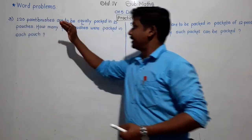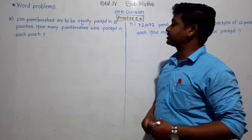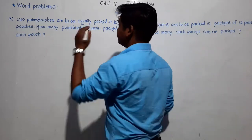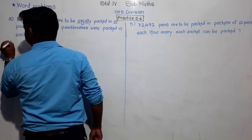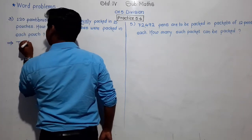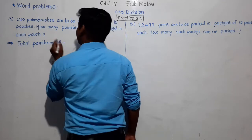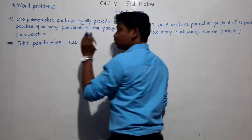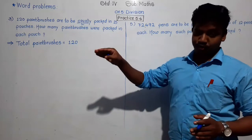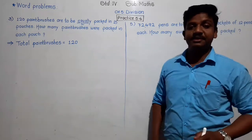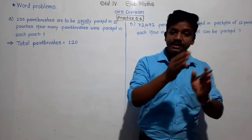Problem number 3: 120 paintbrushes are to be equally packed in 15 pouches. How many paintbrushes were packed in each pouch? Again, see the word 'equally' — there are total 120 paintbrushes. These 120 paintbrushes are to be equally packed into 15 pouches. Then in each pouch, how many paintbrushes will be there? Equally packed means equal division — we have to keep an equal number of paintbrushes in each pouch. That is division.